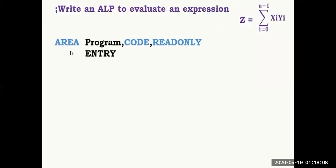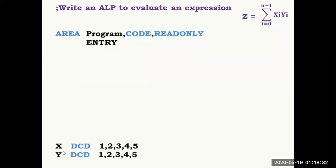This is the starting of the program area using assembler directives. The file is named program and is written in code — code read only — meaning it is program memory. The entry directive marks the start of the program. Two variables X and Y are initialized using define constant double, each with five 32-bit values.